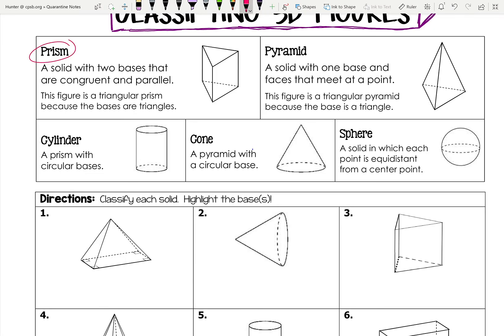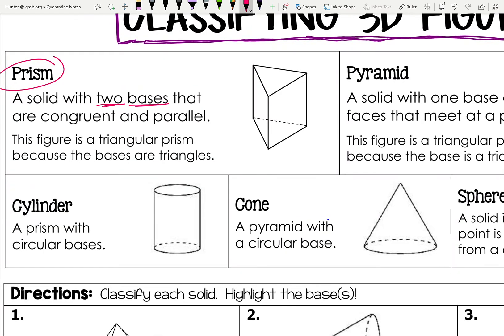A prism is a solid with two bases that are congruent and parallel. Congruent means the bases are the same size, and parallel means these two planes — the two bases — will never intersect. This figure is a triangular prism because the bases are triangles. The two triangular bases are the same shape and parallel to each other. The other three sides are not parallel, so having two parallel sides is what makes it a prism.